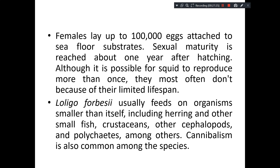Even if reproduction can take place, the fertilized eggs may not be able to reach far-away places where they can become colonized. Another prominent example is Loligo forbesi — it feeds on organisms smaller than itself, including herrings and other small fishes, crustaceans, and can even feed on other cephalopods and polychaetes. Cannibalism is also common.